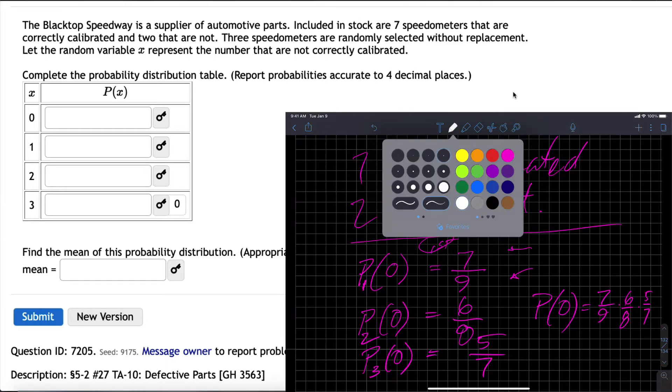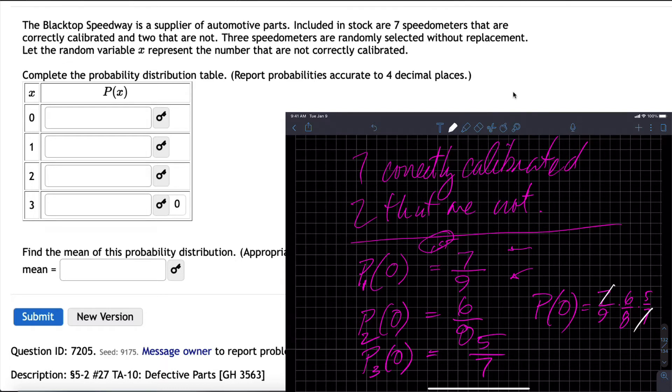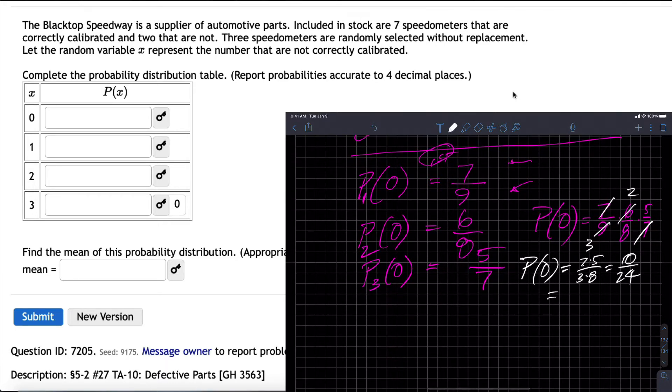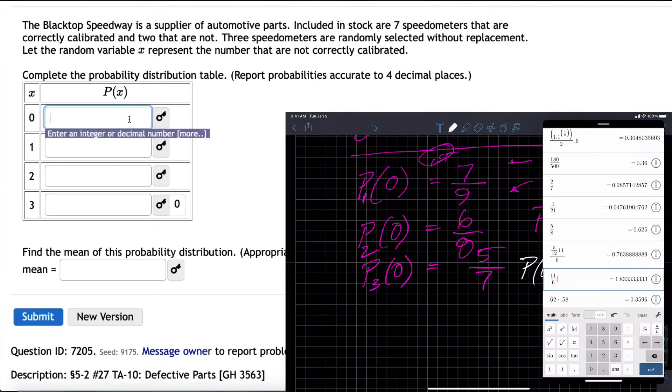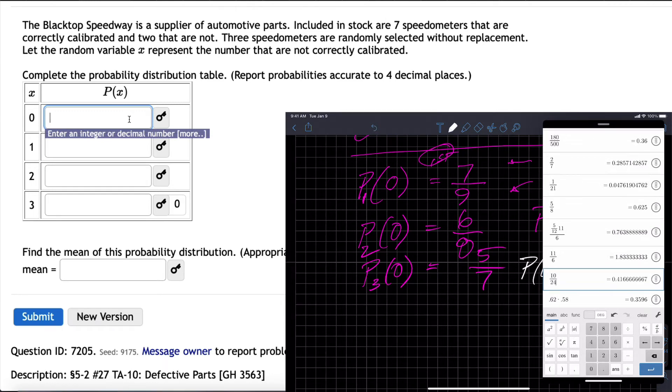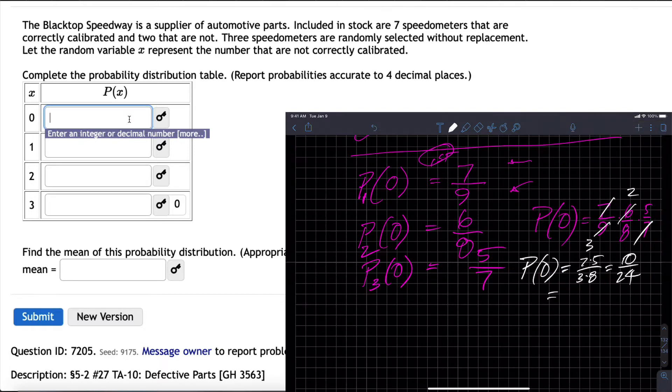If we simplify our work a little bit, these sevens cancel. Three goes into six twice, three goes into nine three times. So the probability of zero is two times five over three times eight, which is 10 over 24. Since the software wants four decimal places, 10 divided by 24 equals 0.4167.